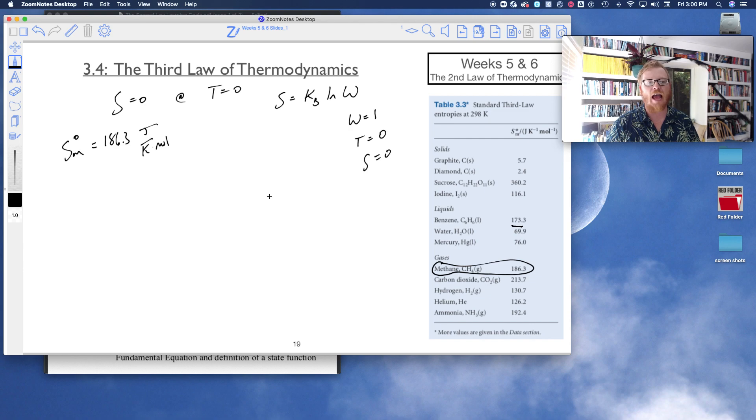When we talk about calculate a third law entropy, what it means is we've been able to get our data down. So in our thermogram, we got our thermogram all the way down to zero Kelvin, or damn close to it, to get a proper third law entropy.